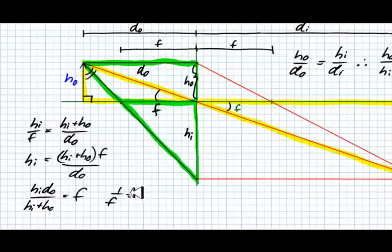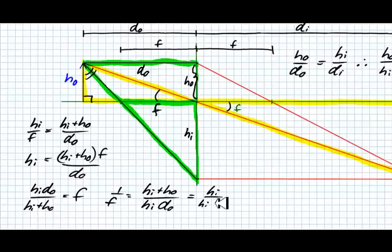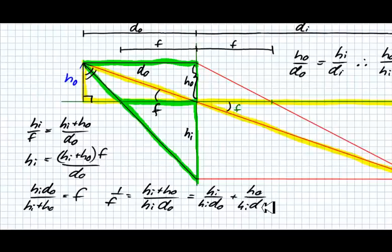Therefore, 1 over f is equal to hI plus hO over hI dO. And then what I'm going to do is break that up into two terms. So we have hI over hI dO plus hO over hI dO. Well the hI's here clearly go away, and we're left with 1 over dO plus hO over hI dO.